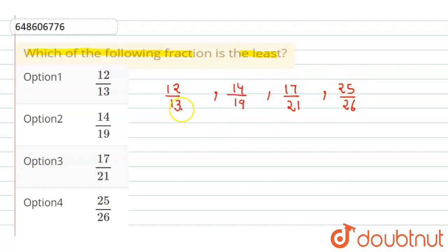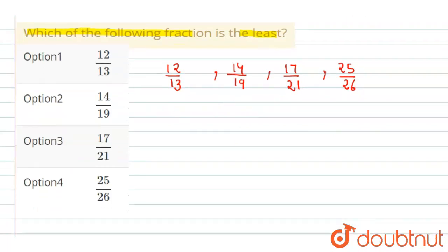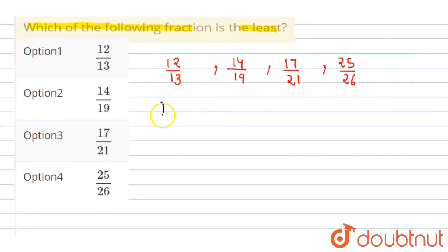Now, here we can see the denominators. All are prime numbers. If we take the LCM, it will be a big figure. So simply, we need to divide each fraction.